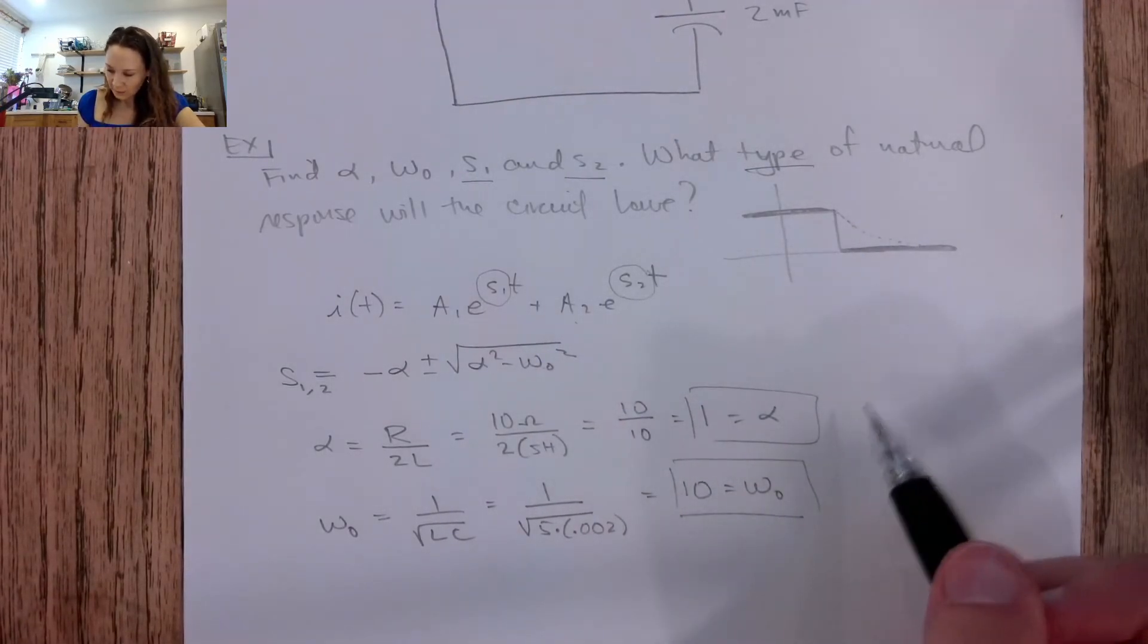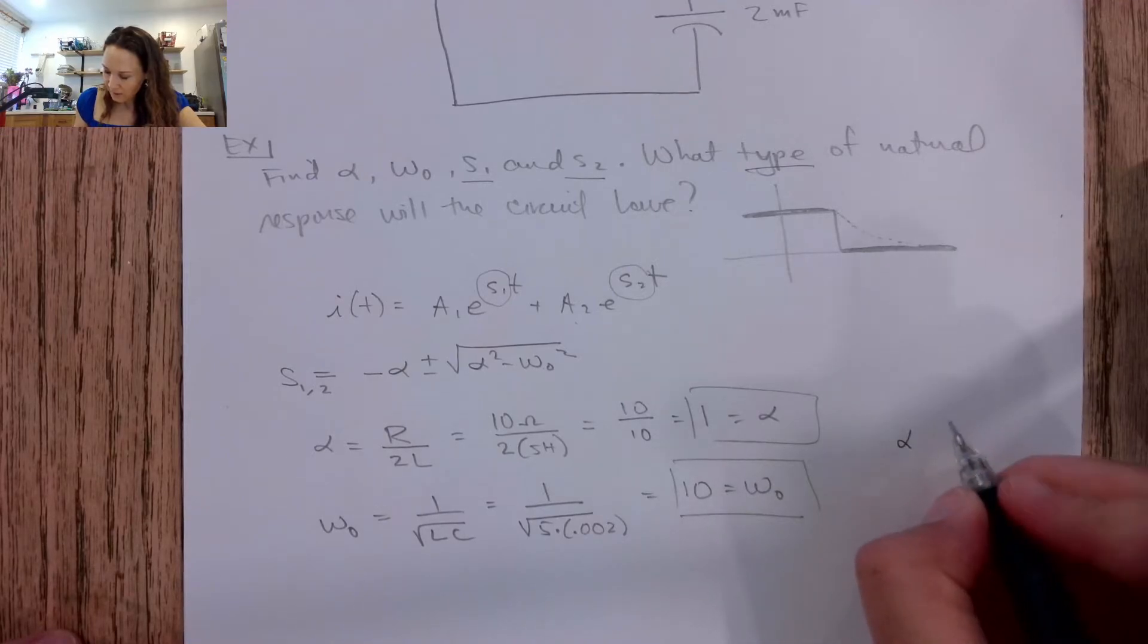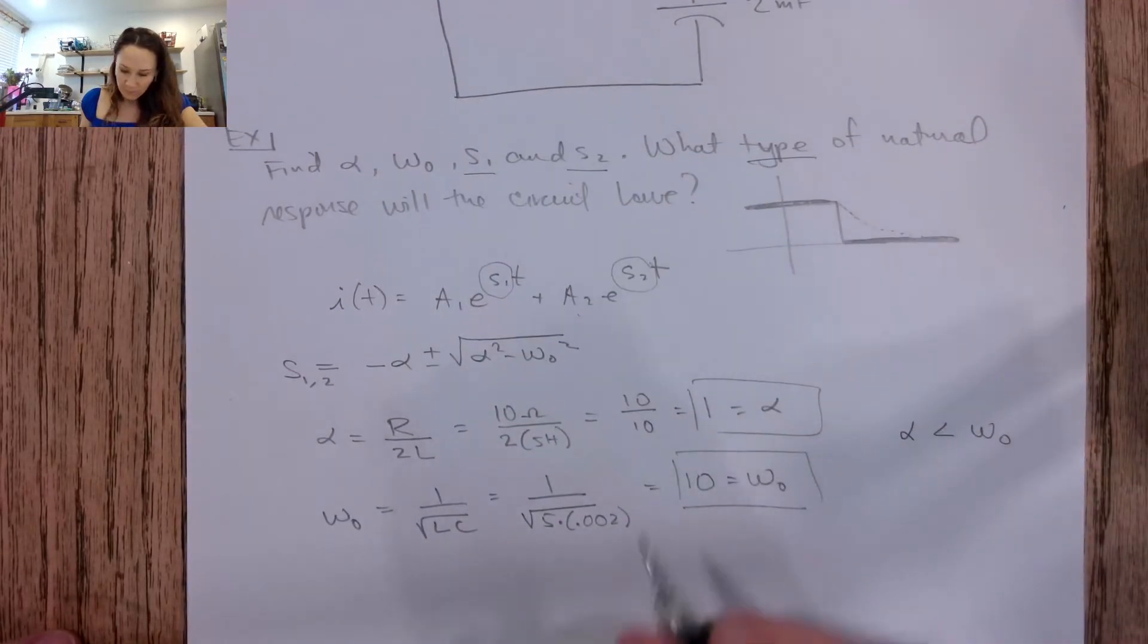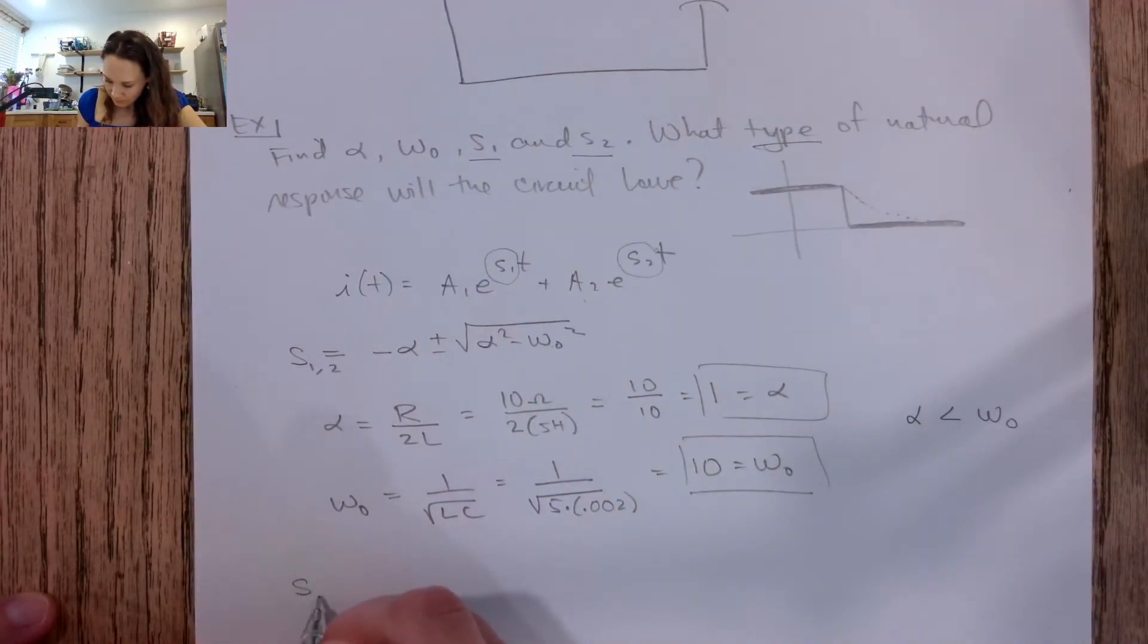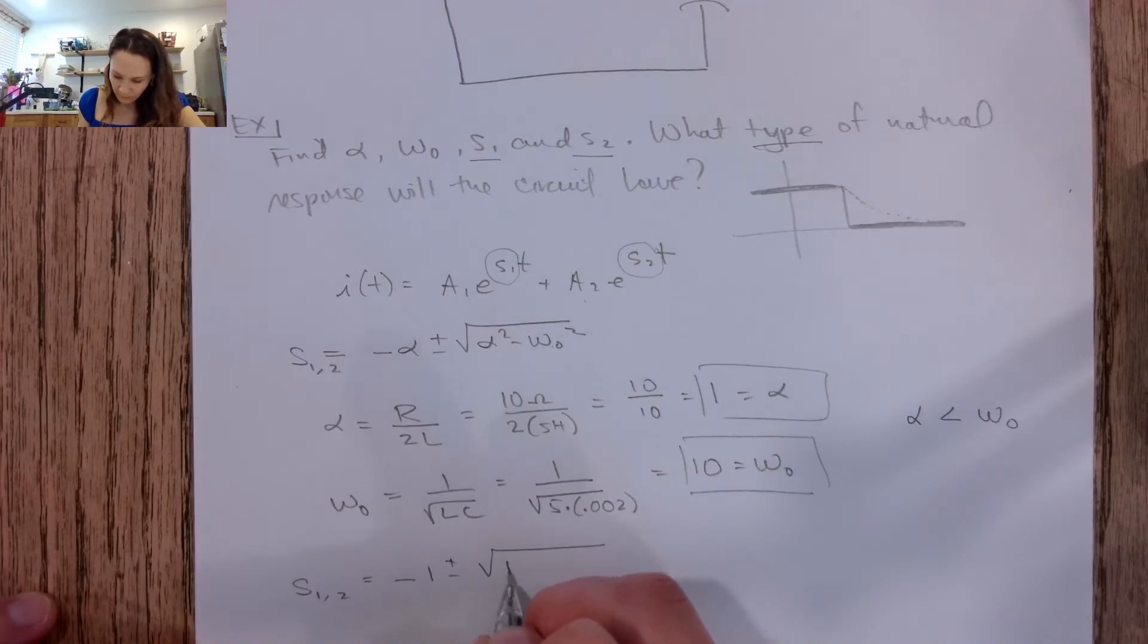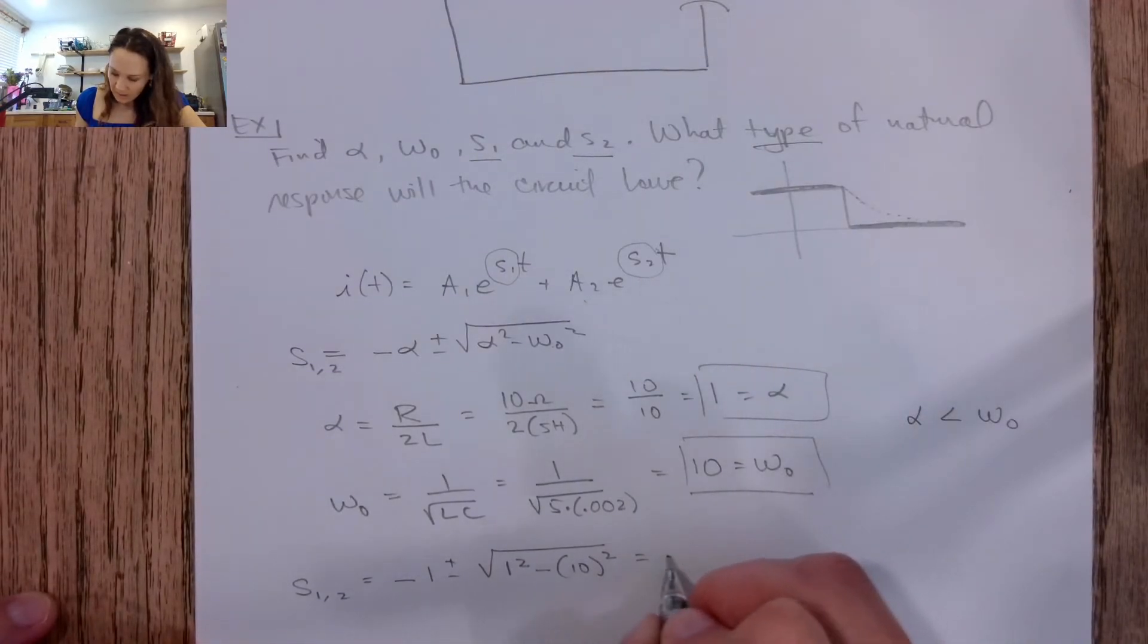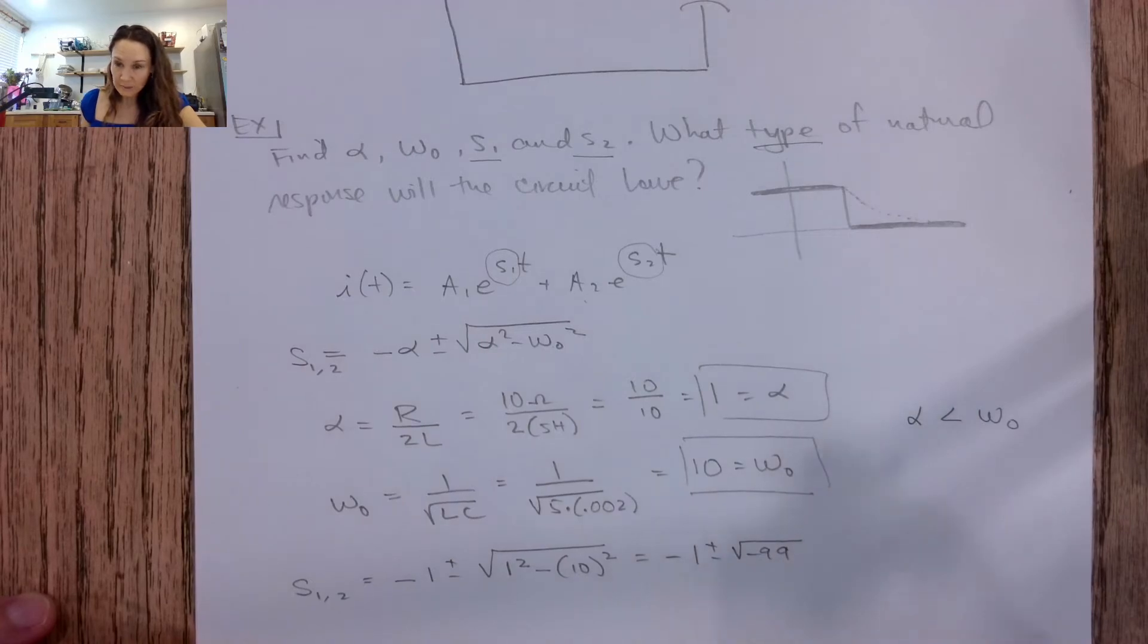But in this particular case, we have that alpha is less than omega naught. So when we go to solve this equation here, our s1 and s2 is going to be negative 1 plus or minus the square root of alpha 1 squared minus 10 squared, so this will be negative 1 plus or minus the square root of negative 99.